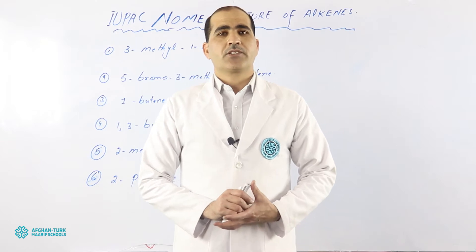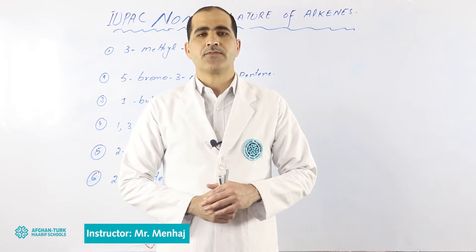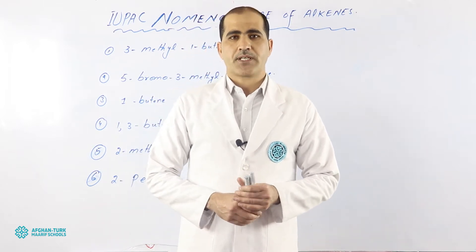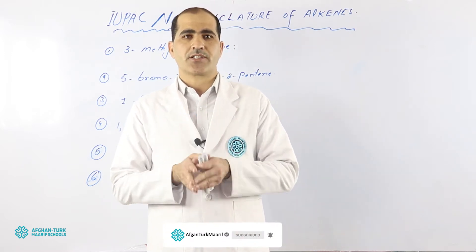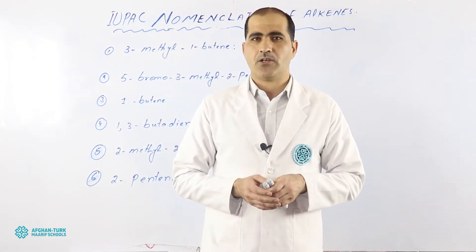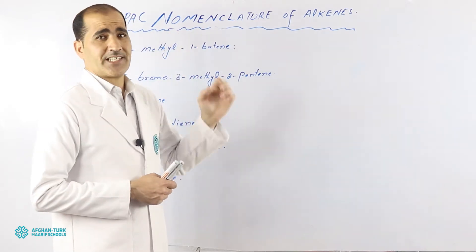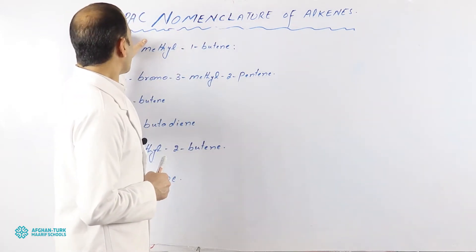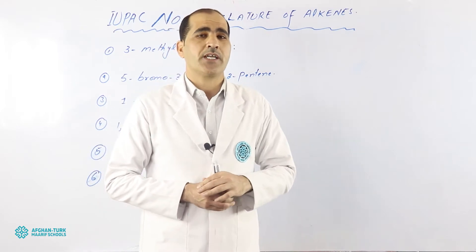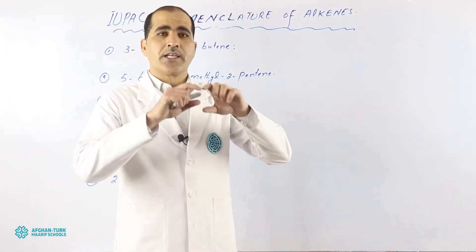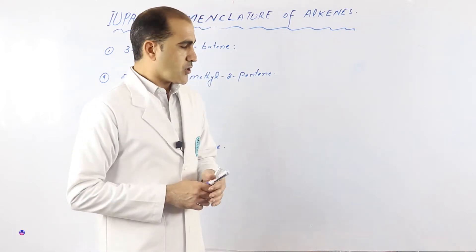Hello, my dear students, welcome back to class 9 chemistry. Last time we studied about the alkenes family — some basic points — but today we will talk about the naming and how we can draw their structures for different compounds in the alkenes family. Here we will cover IUPAC nomenclature of alkenes. IUPAC stands for International Union of Pure and Applied Chemistry.